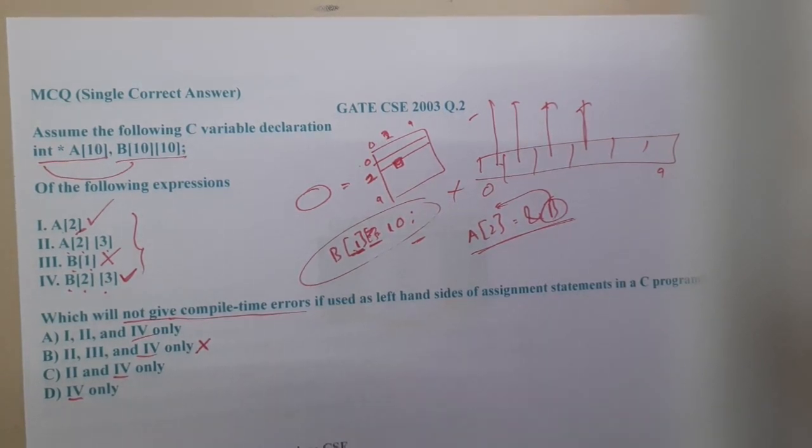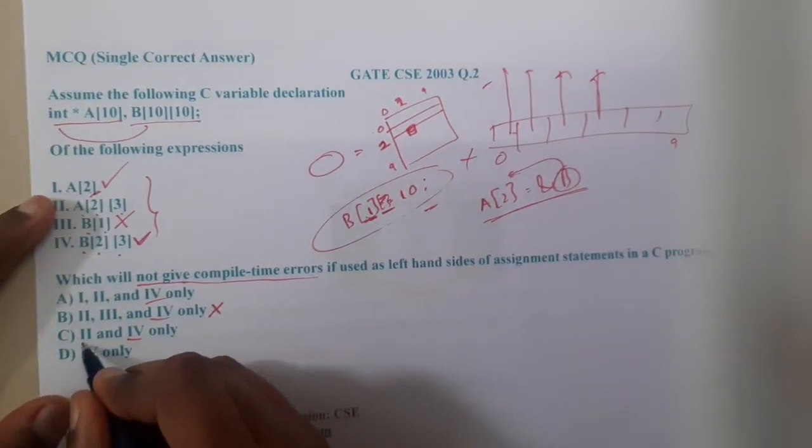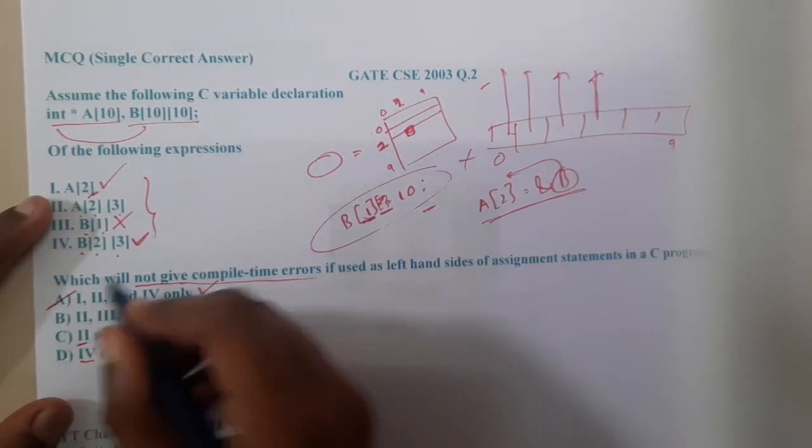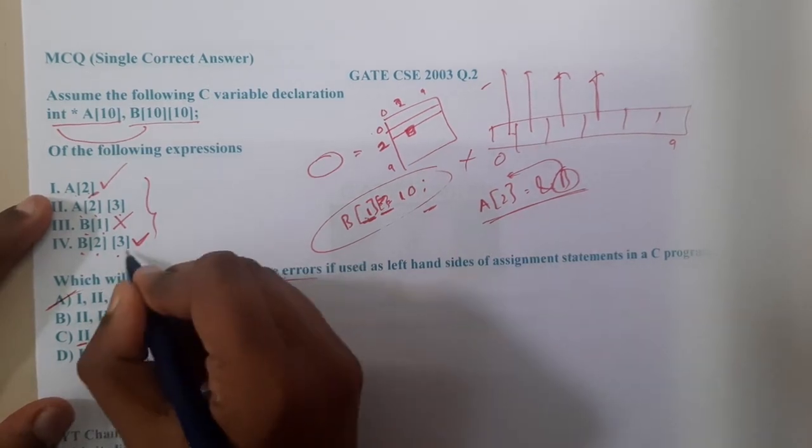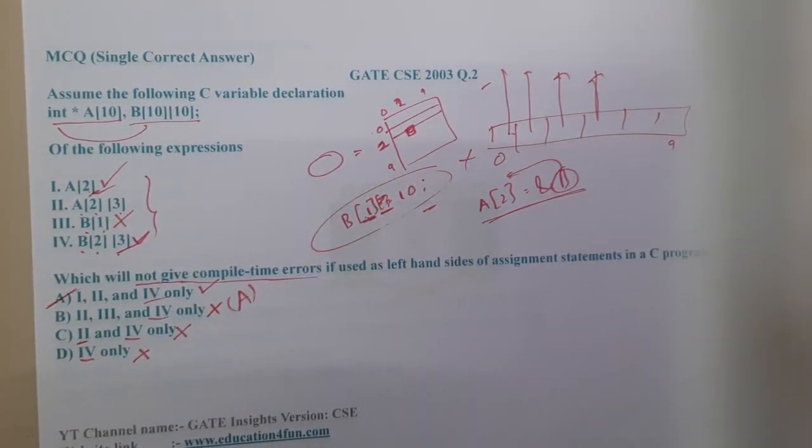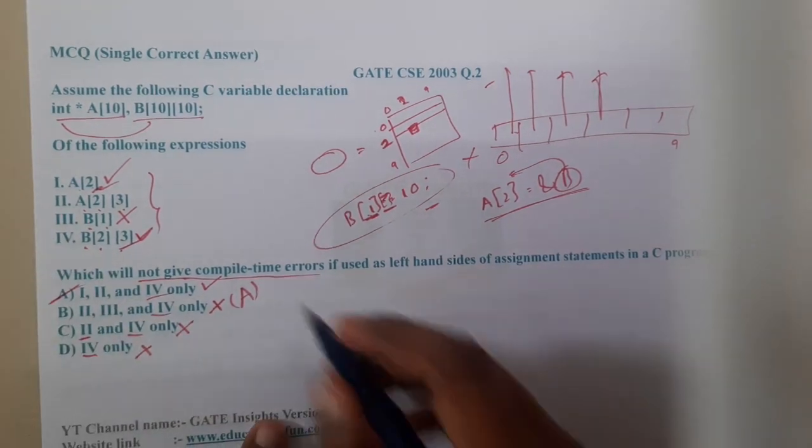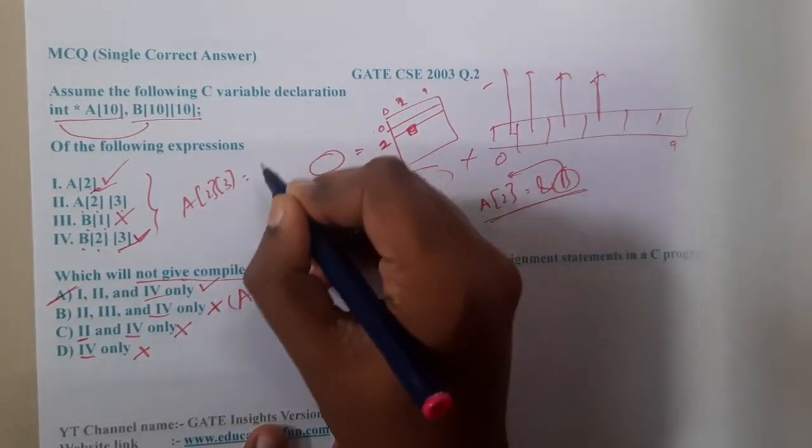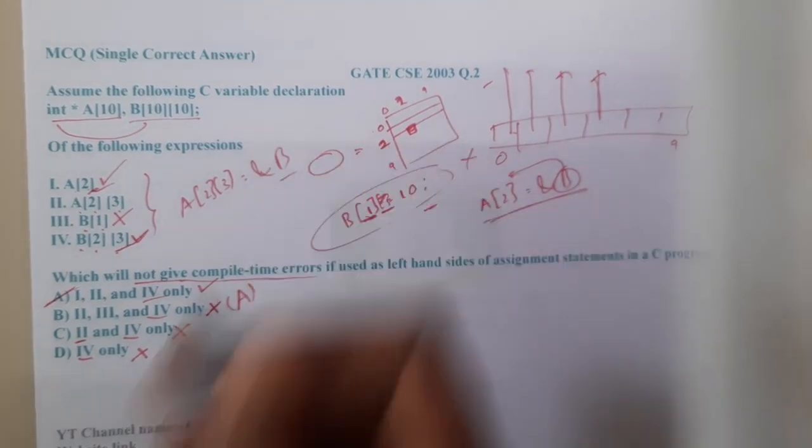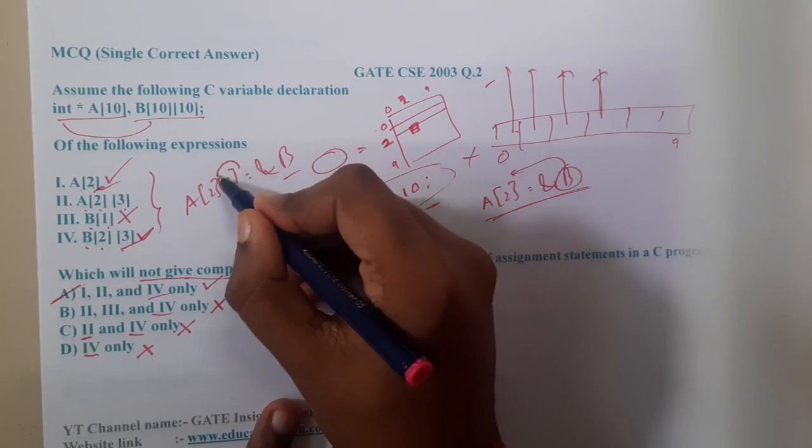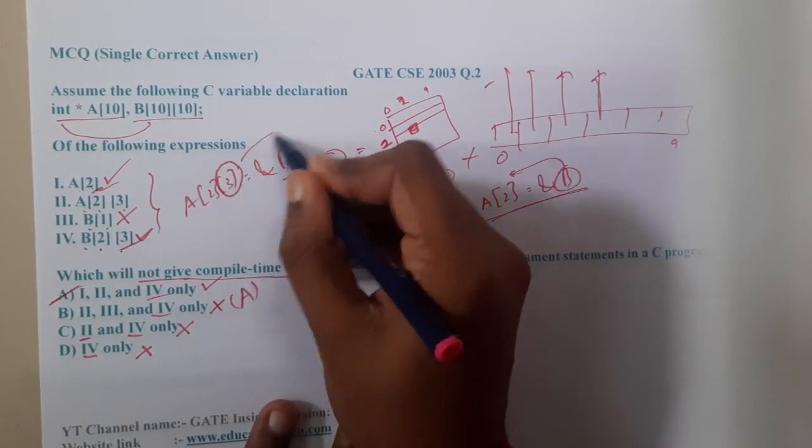By that I can conclude that this option is not having 1, so hence this option is also wrong, this option is also wrong. Hence option A should be the obvious correct answer as I am sure with 4 and 1. Now let's check second one - a[2][3]. Can we assign address of b in that way? Is it possible? Here we are giving an extra dimension, right? Is this dimension really existing? No, hence the C compiler will avoid it.